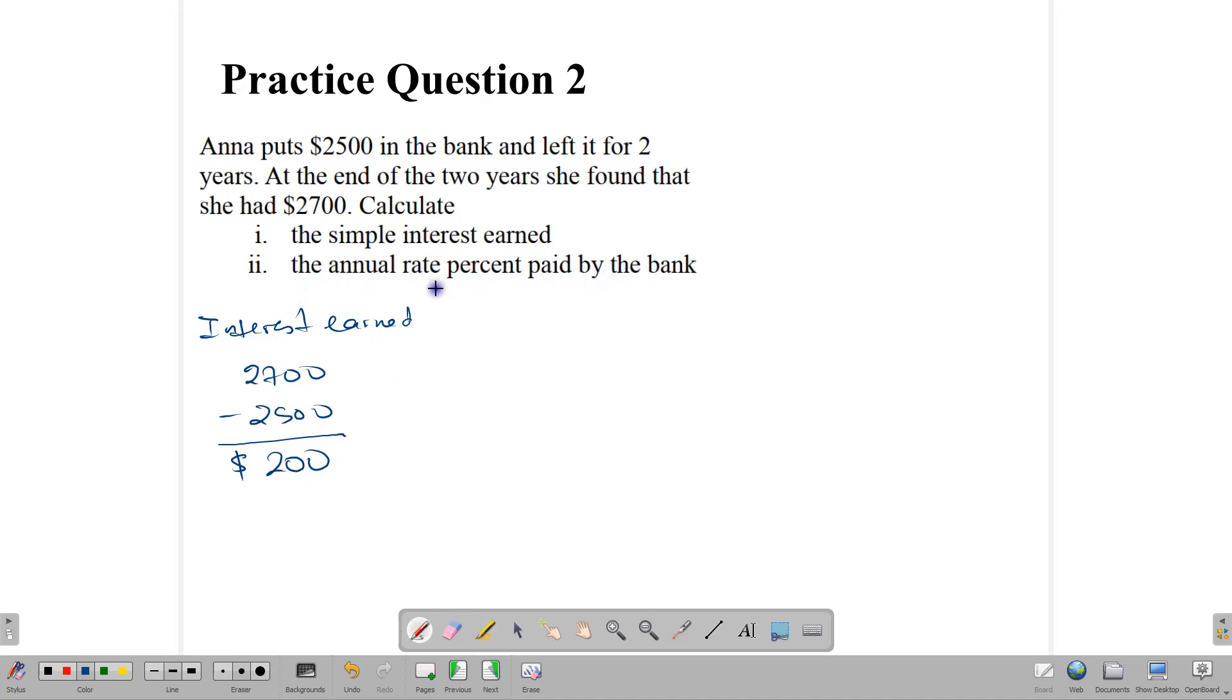And the second part is to calculate the annual rate percent paid by the bank. Sometimes they call it that, APR, annual percentage rate. Sometimes they just say interest. Otherwise, they just say interest rate. Same thing. So we are going to write down our formula. PRT over 100 is equal to interest. Now, what do we know? We are supposed to calculate the interest rate. So we know the principal. The principal is $2,500.